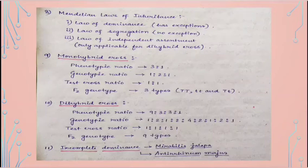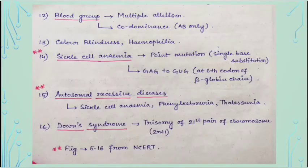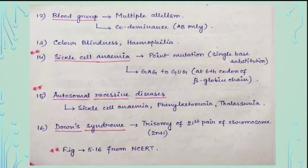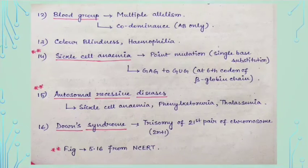Examples of incomplete dominance are Mirabilis jalapa (four o'clock plant) and Antirrhinum majus (snapdragon). Blood group is an example of both multiple allelism and codominance — for codominance, only the AB blood group is applicable. For colorblindness and hemophilia, go through those diseases once. The most important disease from this section is sickle cell anemia, which occurs due to a point mutation — a single base substitution.